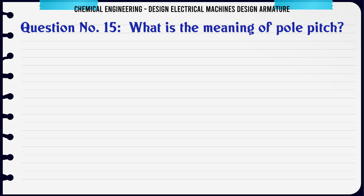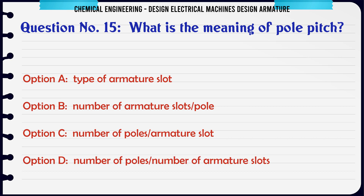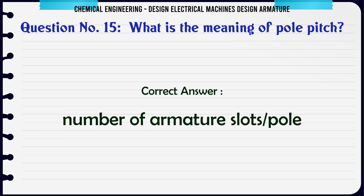What is the meaning of pole pitch? Options: A) Type of armature slot, B) Number of armature slots/pole, C) Number of poles/armature slot, D) Number of poles × number of armature slots. The correct answer is Number of armature slots/pole.